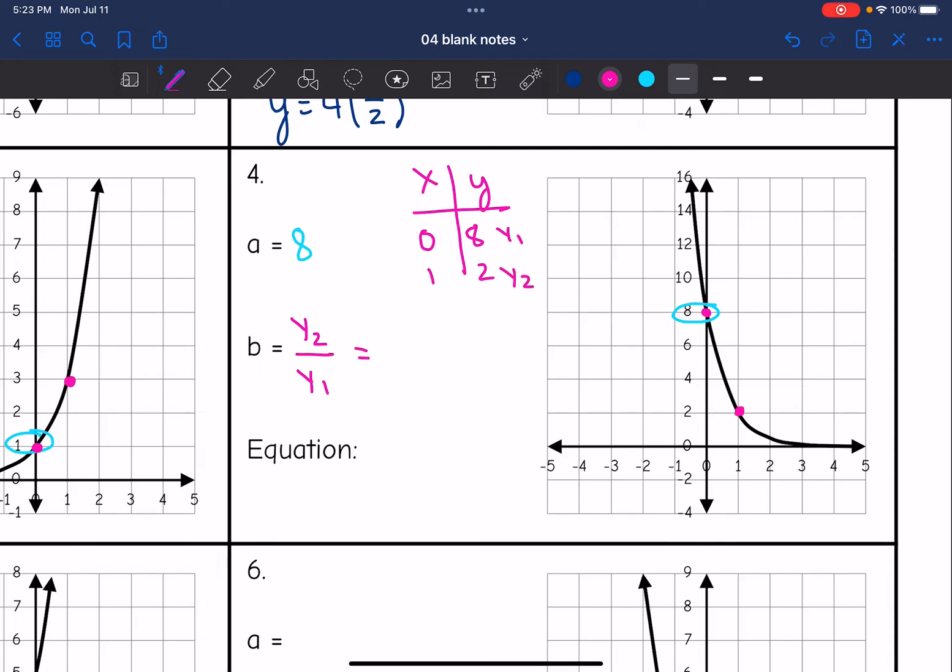So when I do y2 divided by y1, I will get 2 over 8, which simplifies to 1 fourth. So then our equation is y equals 8 times 1 fourth to the x.